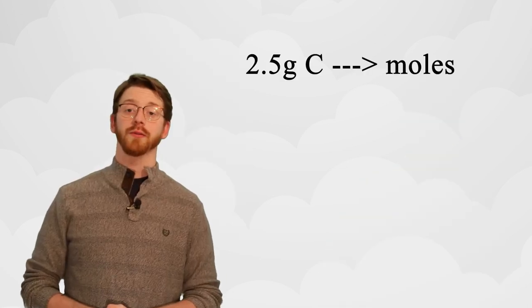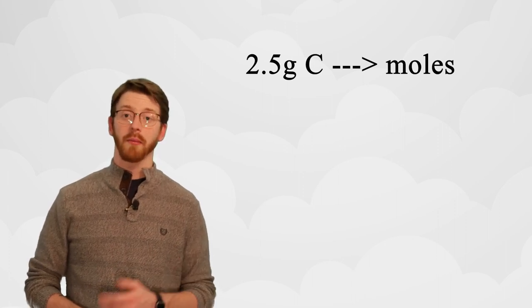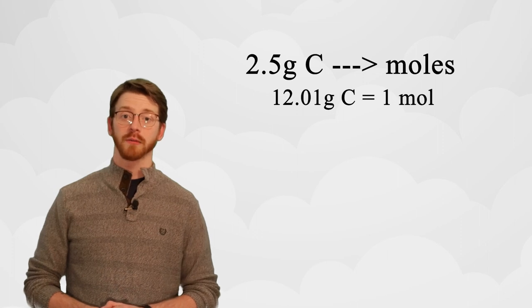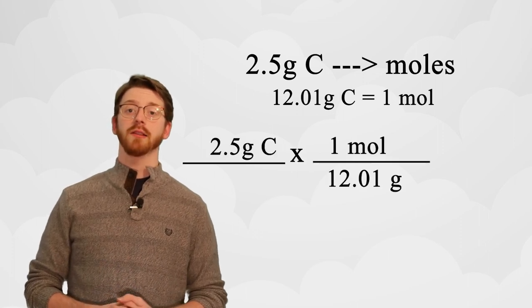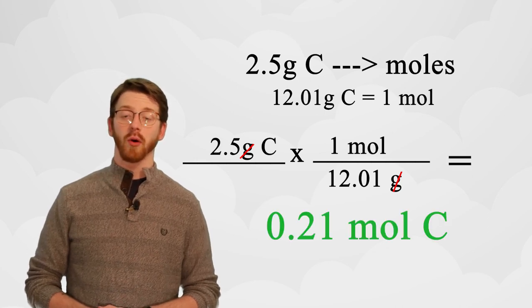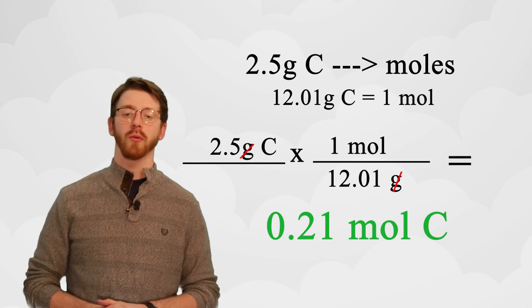Let's say that we have 2.5 grams of carbon. We can figure out how many moles we have using the atomic mass of carbon from the periodic table, which is 12.01 grams per mole. Using dimensional analysis, we can set up our equation so that our units cancel out, and our answer is left in moles. Thus, 0.21 moles of carbon.